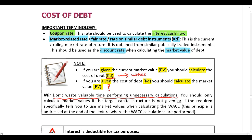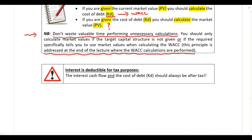You will need to calculate the cost of debt if it's not provided, because you need it to calculate the weighted average cost of capital. This principle will be addressed at the end of the lecture where we cover WACC calculations. You do always need the cost of debt when calculating the weighted average cost of capital, but you don't necessarily always need the market value. The main difference between preference shares and debt is that with debt, interest is tax deductible.